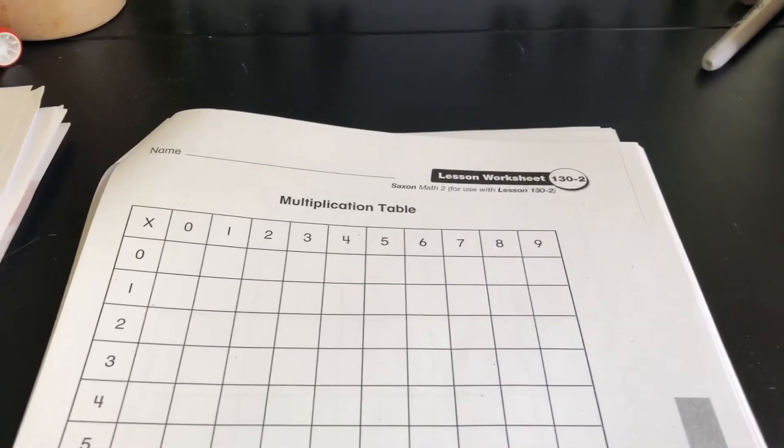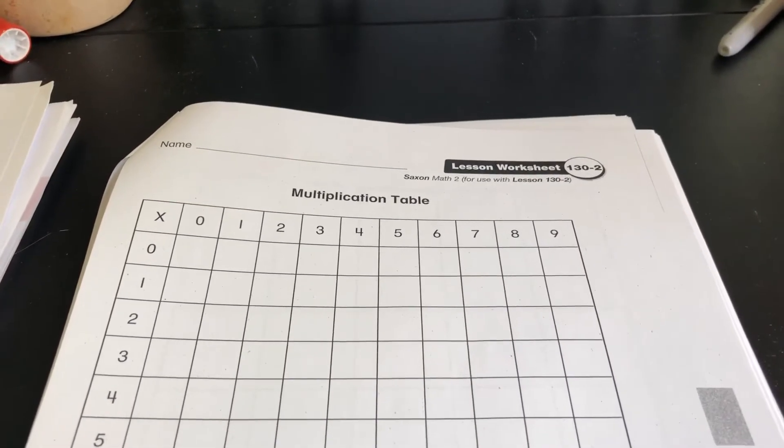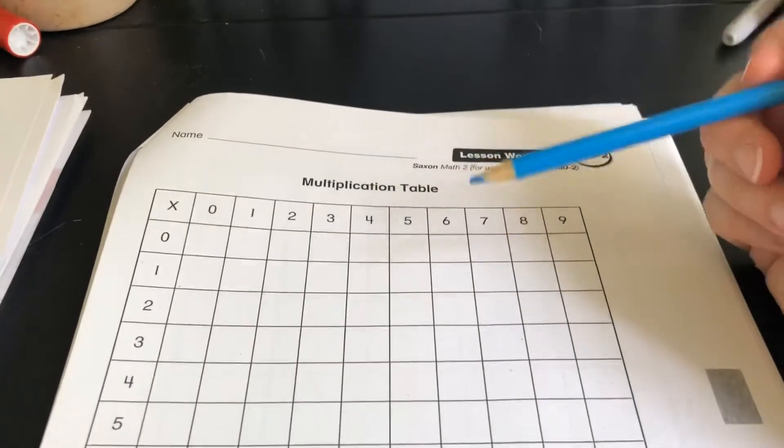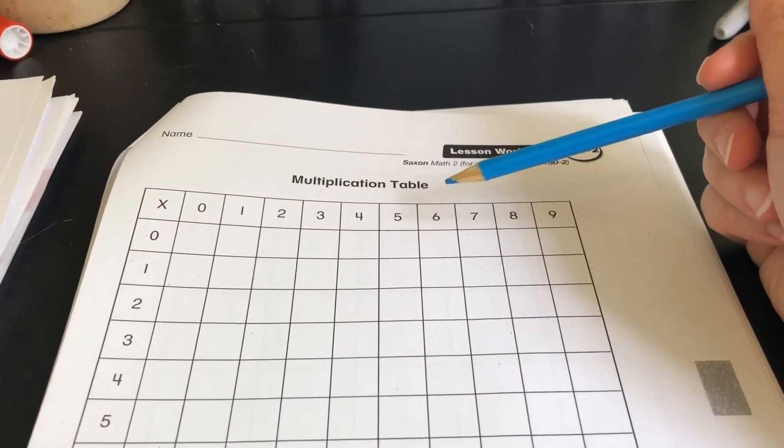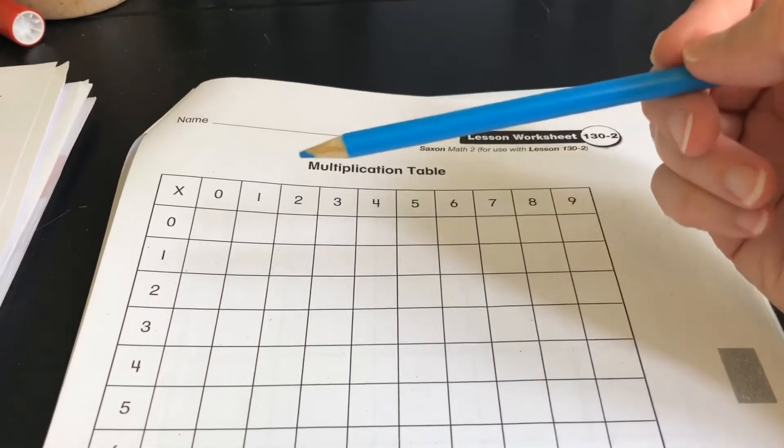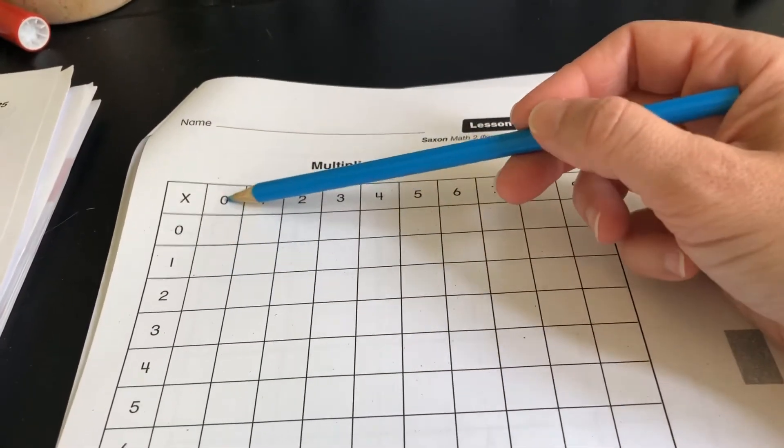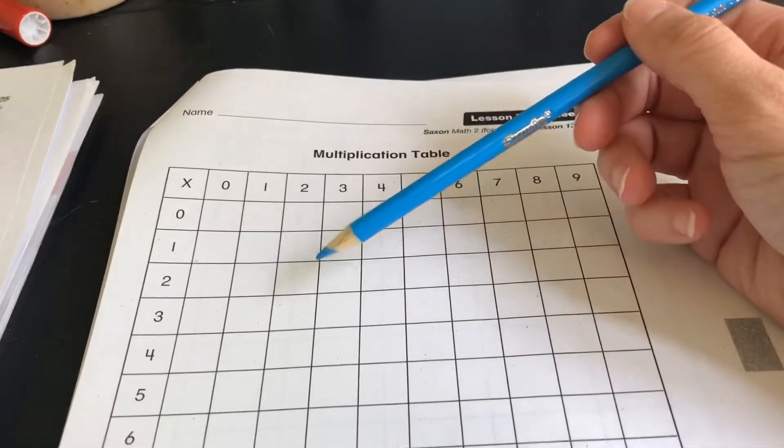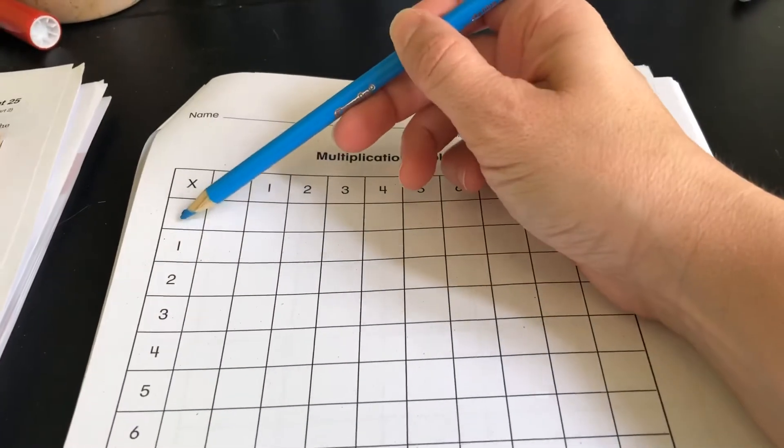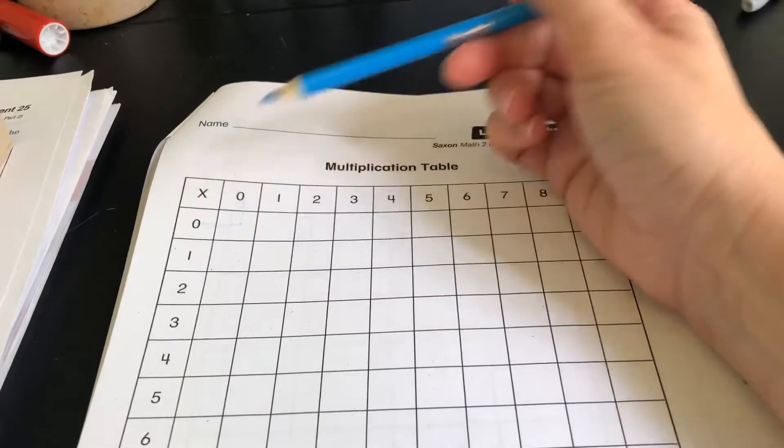All right friends, this is our last page for today. This is, as you can see, a multiplication table. And the way it works is where the two numbers meet, you write down what those equal to when they're multiplied. So, for example, zero times zero, well, that's just zero.